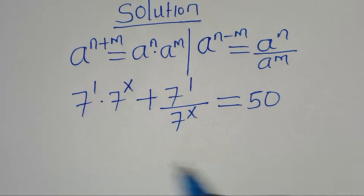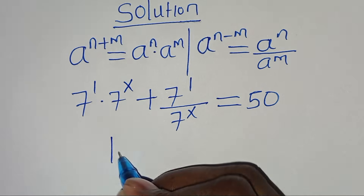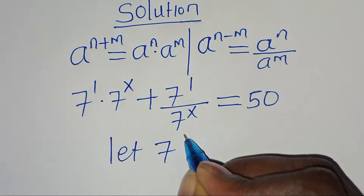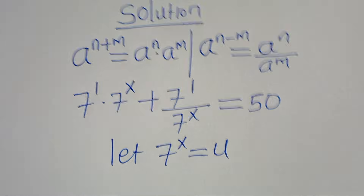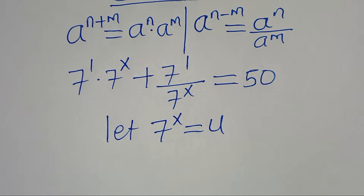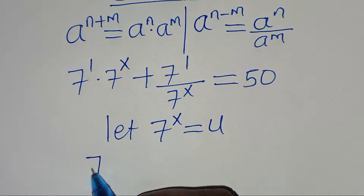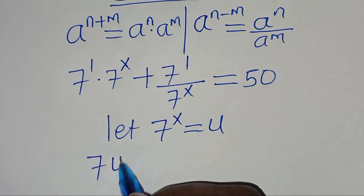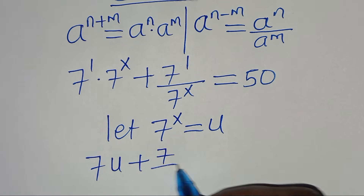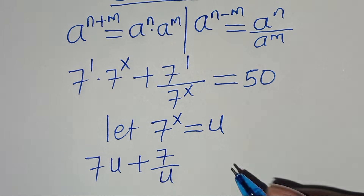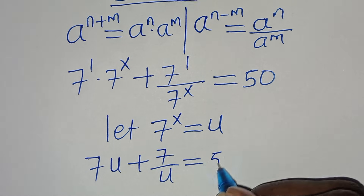Now the next step: we can let 7 to the power of x be equal to u. Substituting 7 to the power of x with u, we have 7u plus 7 divided by u, and this is equal to 50.